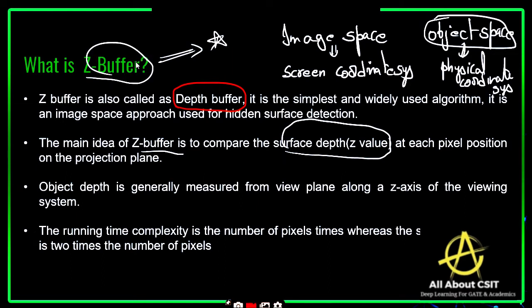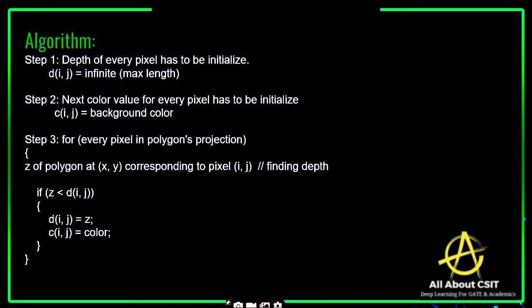In back face detection, the back side of an object is not visible. But in the Z buffer, if you take multiple surfaces, each surface is determined separately. Object depth is generally measured from the view plane along the Z axis. The running time complexity is the number of pixels, and the space complexity is two times the number of pixels.